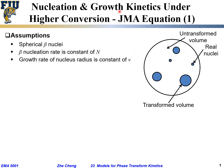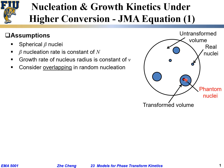These three assumptions are the same as before for the low conversion case. However, to deal with higher conversion we have to consider overlapping in random nucleation. When we say random nucleation, we allow nuclei to form randomly anywhere within the host or matrix material. But if a nucleus tries to occur within the already-transformed volume — the blue region — can it happen? No, because it's already been transformed from the matrix phase to the precipitate phase.